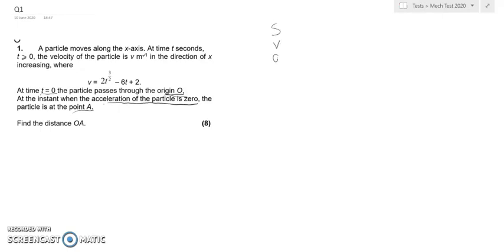Write down S, V, A. When we want to go from velocity to acceleration, we need to differentiate. Acceleration, by definition, is the rate of change of velocity with respect to time, which means it's the differential of velocity.